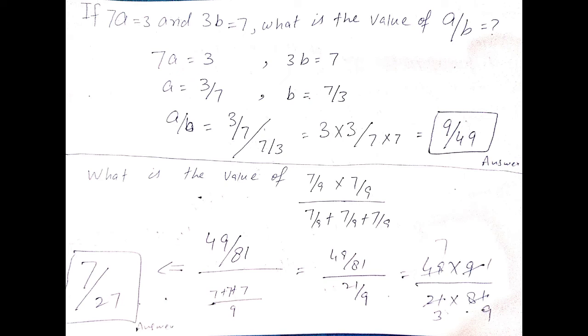If 7a is equal to 3 and 3b is equal to 7, what is the value of a/b? First, we have written equation that 7a equals 3. Second equation, 3b equals 7. We have seen that a is equal to 3/7, b is equal to 7/3. So a/b is equal to 3/7 divided by 7/3.